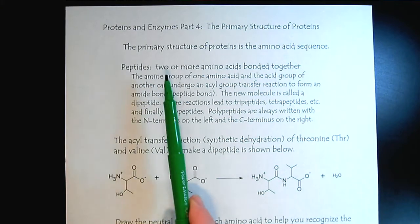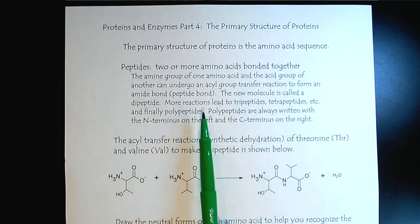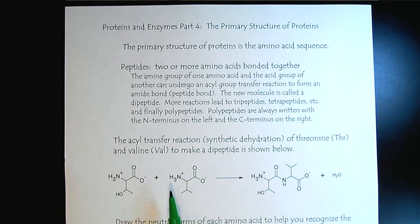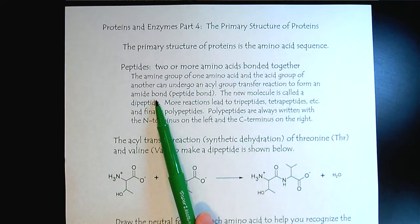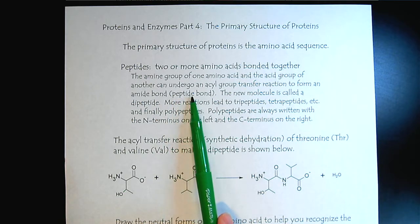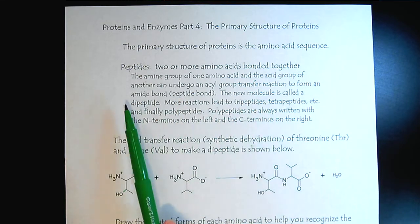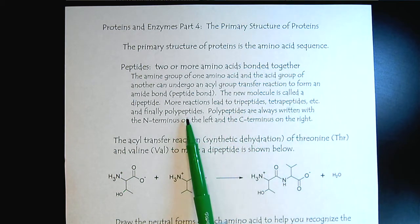As we know, a peptide is two or more amino acids bonded together. The amine group of one amino acid and the acid group of another undergo an acyl transfer reaction to form an amide bond, which we call a peptide bond. The new molecule is a dipeptide, and we can keep adding amino acids to build up our peptide chain to three, four, to many peptides.